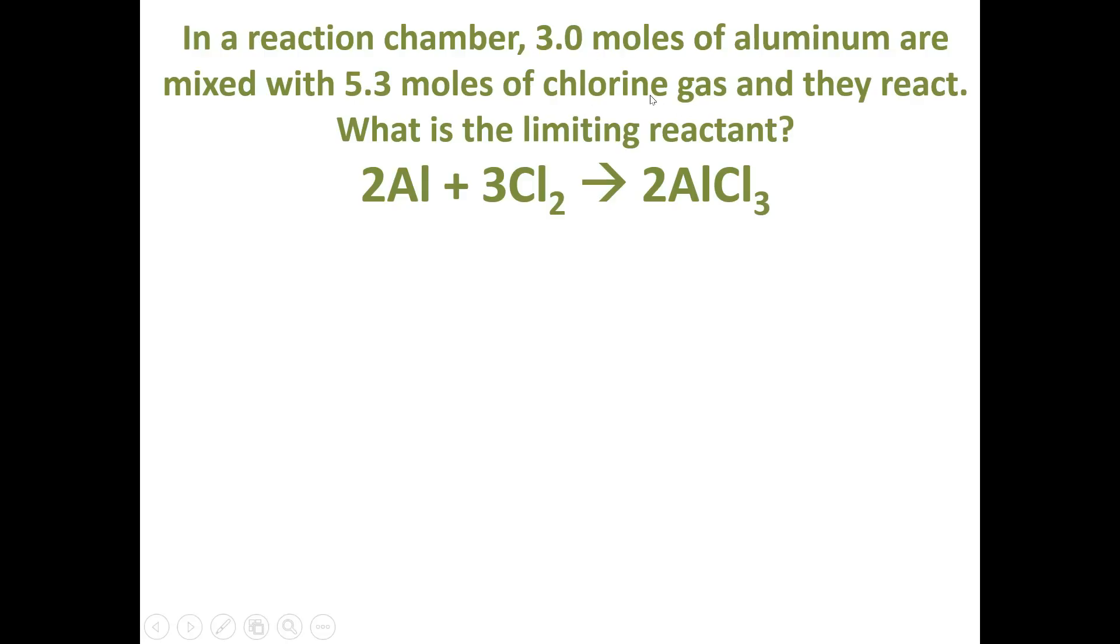Remember, chlorine is a diatomic. It's a Brinkelhoff element, so you always have to have a subscript 2 whenever chlorine is by itself. Whenever chlorine is combined with other elements, you have to follow the rules for either an ionic compound or molecular compound. This is an ionic compound, so you have to find the charges first. Aluminum has a 3 plus charge, chlorine has a negative 1 charge, and that's where the 3 comes from after the crisscross.